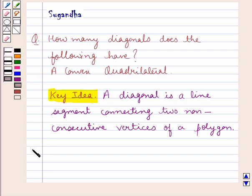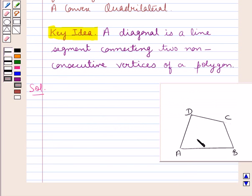Now let's see the solution. Consider this convex quadrilateral A, B, C, D. As you can see in this figure, we have joined the two non-consecutive vertices A and C of this convex quadrilateral. So we have formed one line segment AC.